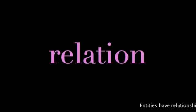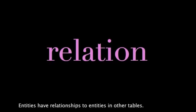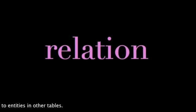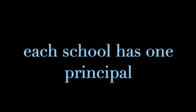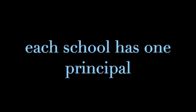It's common for entities to have relationships with entities from other tables. For instance, teachers teach classes and students earn grades. Some of these relationships are one-to-one — a school has only one principal. Some relationships are one-to-many — a student takes many courses.